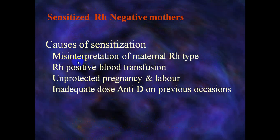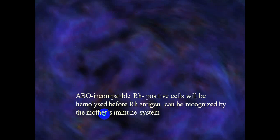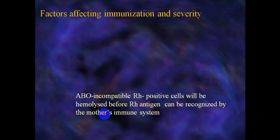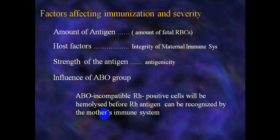Causes of sensitization in an RH-negative mother include: misinterpretation of the maternal RH type, RH-positive blood transfusion, unprotected pregnancy and labor, and inadequate dose of anti-D in a previous occasion or pregnancy. Factors affecting immunization and the severity of RH isoimmunization include: amount of anti-D, host factors and integrity of the maternal immune system, strength of RH antigenicity, and influence of ABO group — since ABO-incompatible and RH-positive cells will be eliminated before the RH antigen can be recognized by the mother's immune system.